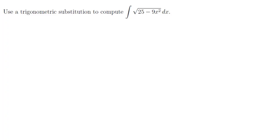Use a trigonometric substitution to compute the integral of the square root of 25 minus 9x squared. So let's first prep this as 25 minus 9x squared to the 1 half power and see where we're going to go from here.